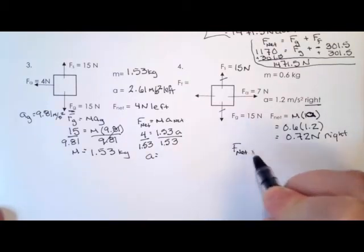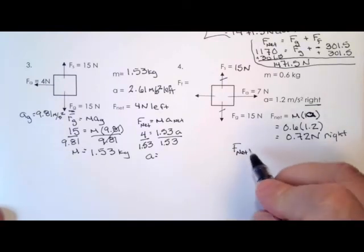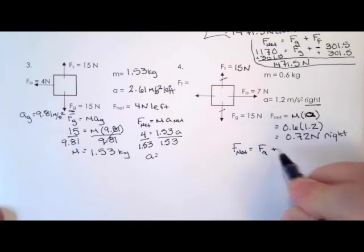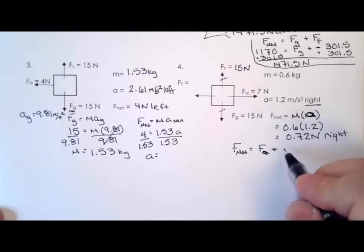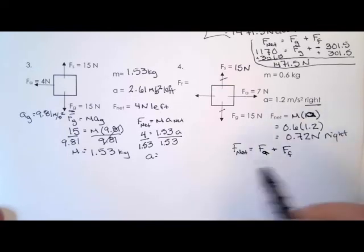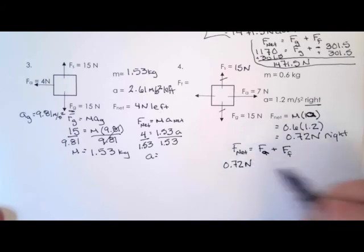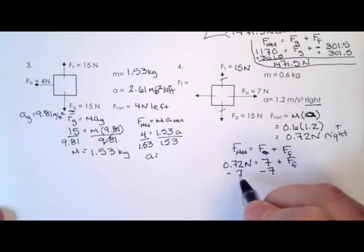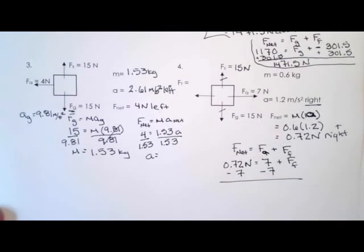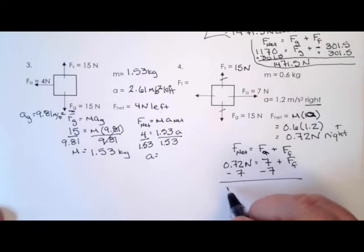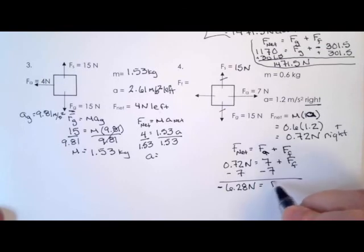So now that we know what the F_net is, we know that net force is the sum of all the forces, equals the force applied plus the force of friction. So F_net is 0.72 newtons to the right, and we're going to say that right is going to be the positive direction here, equals 7 plus the force of friction. We're going to subtract 7 from both sides, so we get negative 6.28 newtons equals the force of friction.